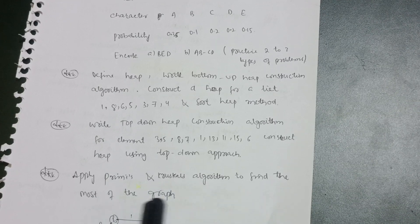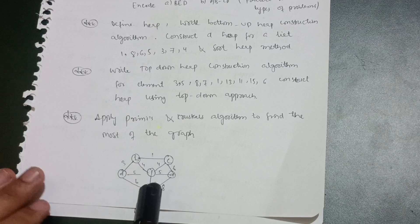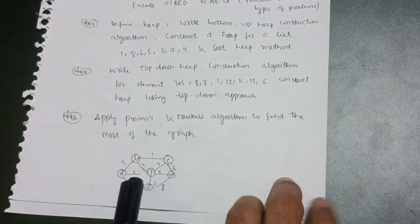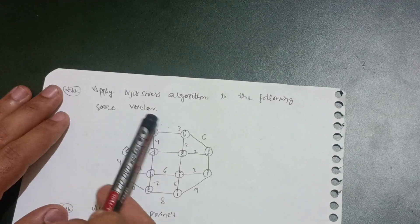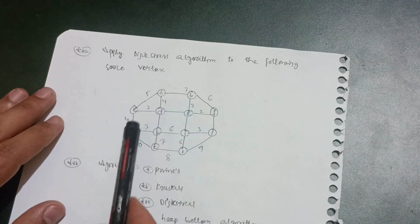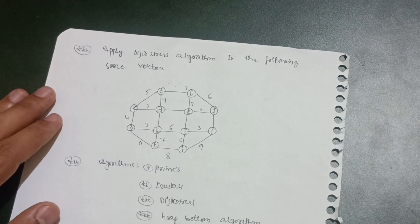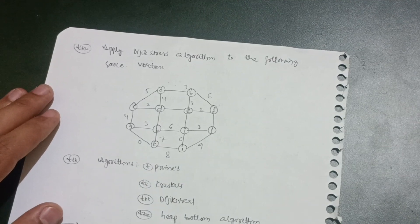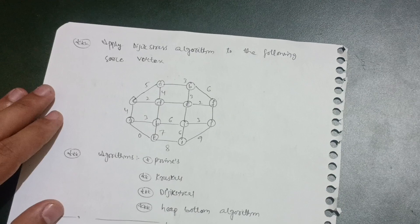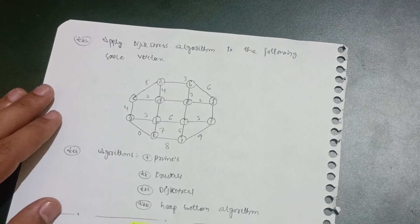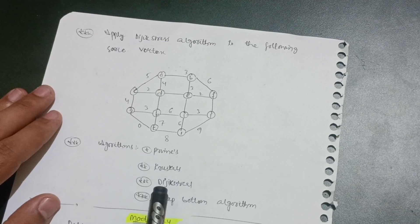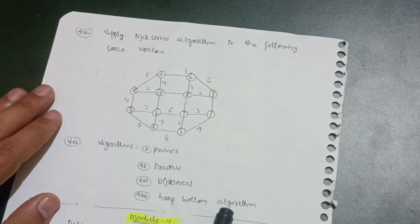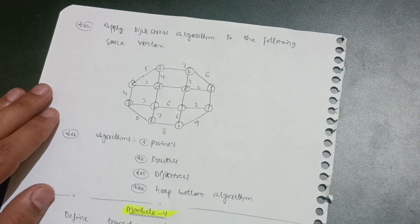Apply Prim's and Kruskal's algorithms to find the minimum spanning tree of a given graph. Then apply Dijkstra's algorithm to the following graph given a source vertex. These modules are problematic, so focus on a variety of problems. Key algorithms to practice: Prim's, Kruskal's, Dijkstra's, and the heap bottom-up algorithm.